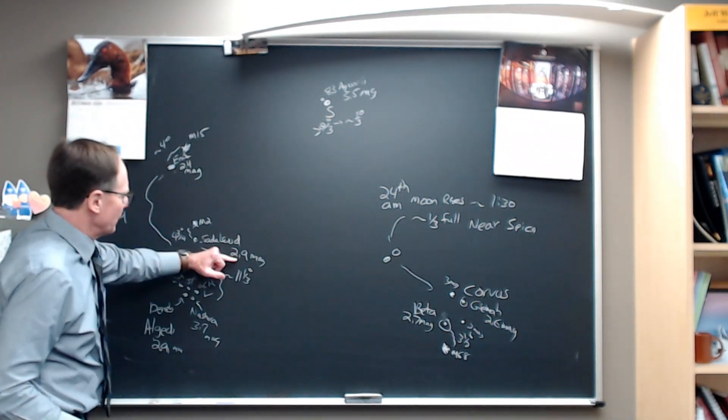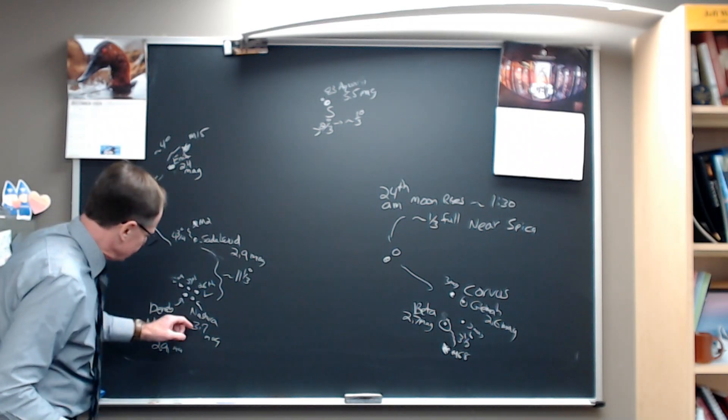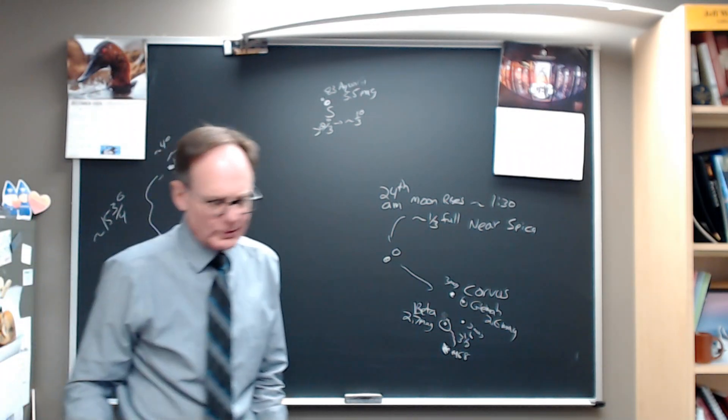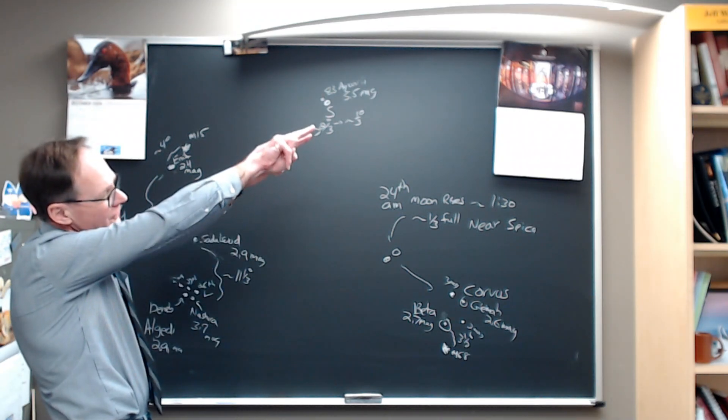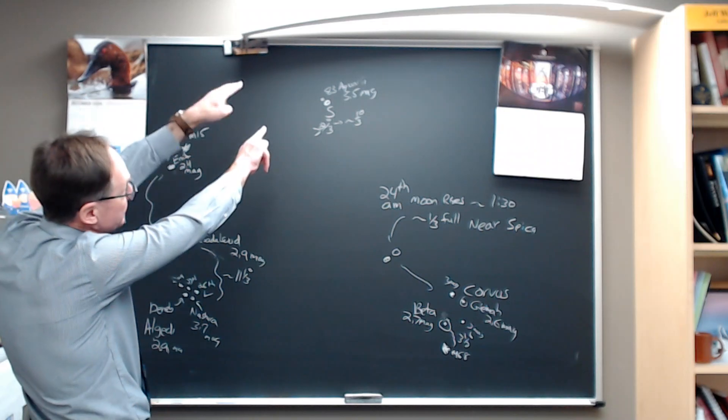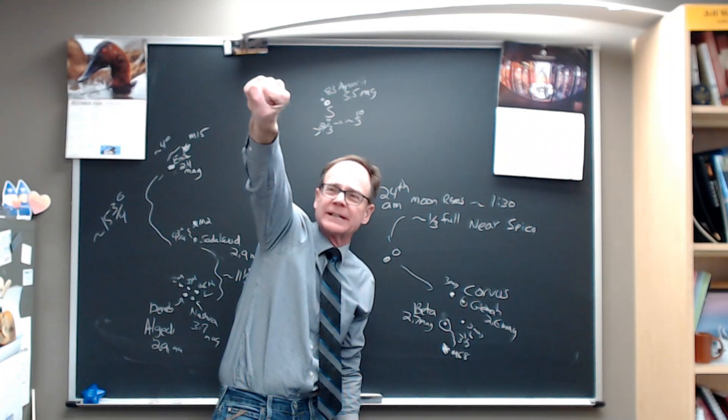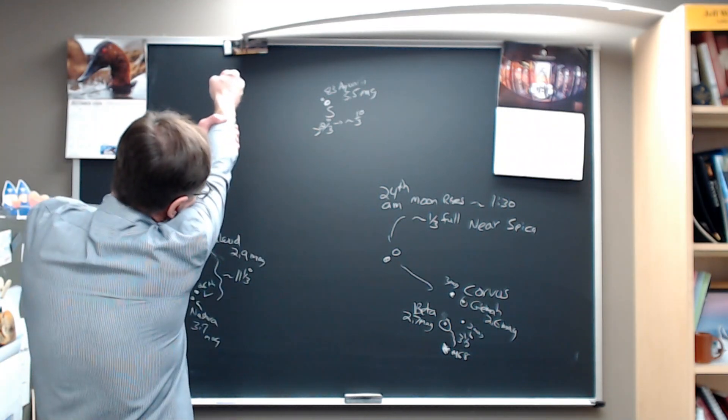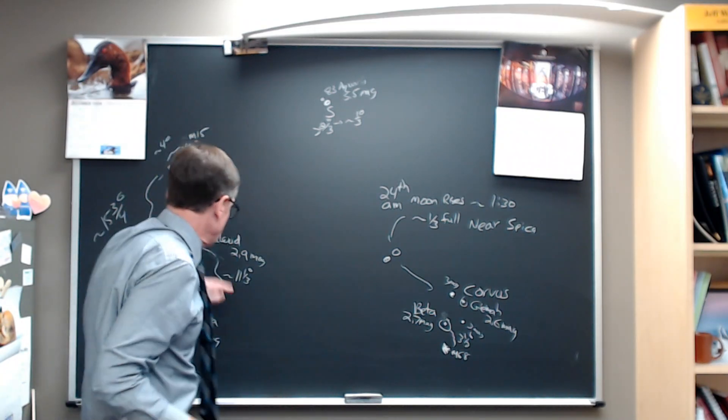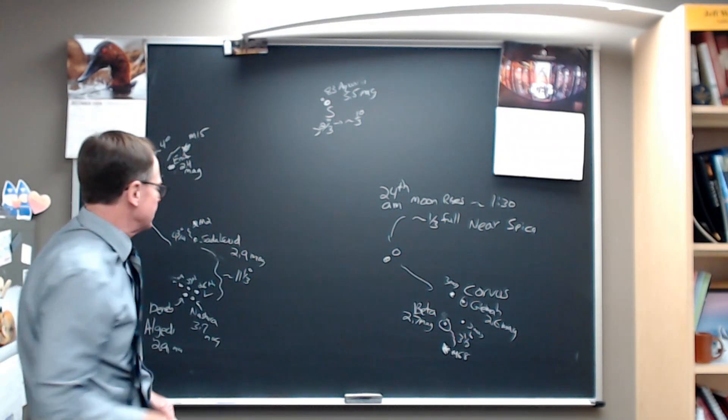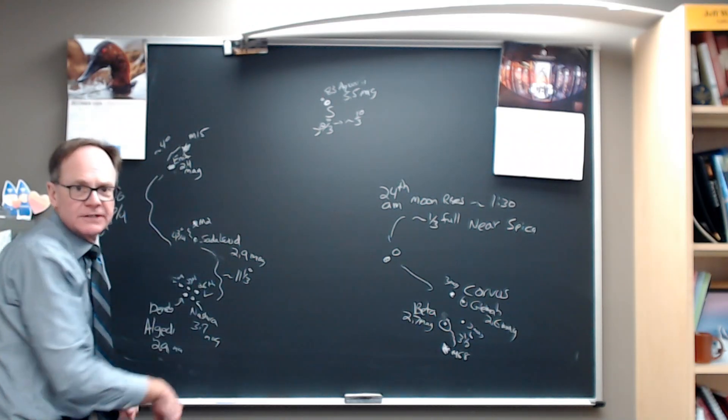But we're going to pop up to 2.9 magnitude Sadal-Sut, and it's about 11 and a third degrees north of Nashera and Deneb Algedi. So you see these two stars, and you pop up to the north about 11 and a third degrees. Remember, for most people, a fist held out at arm's length is about 10 degrees. So it's about one fist width to the north. 2.9 magnitude star, almost identical to Deneb Algedi.